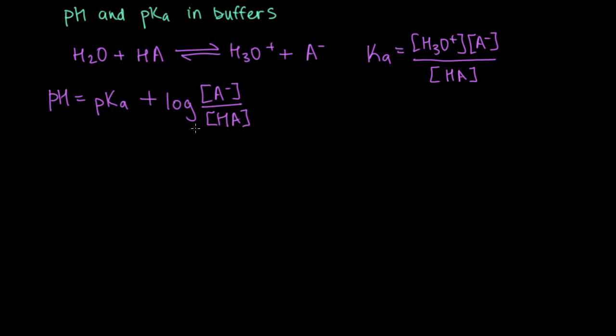We can rearrange the Henderson-Hasselbalch equation to get a lot of different kinds of information. One kind of problem you see a lot is for some buffer, they might ask you what's the pH. And then that means you probably know the pKa, and you know the concentrations of A minus and HA. The other thing that you can use the Henderson-Hasselbalch equation to tell you is the relationship between A minus and HA.